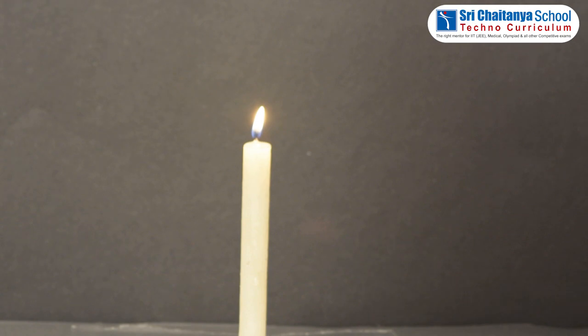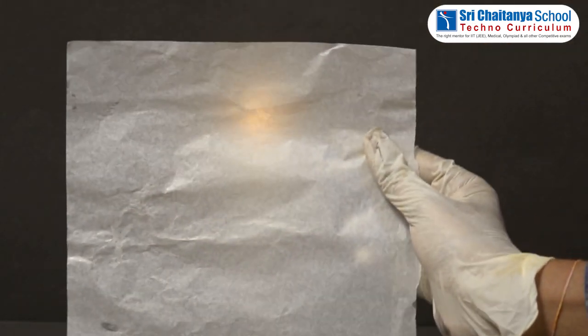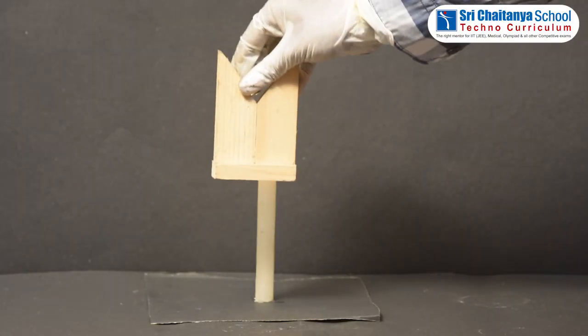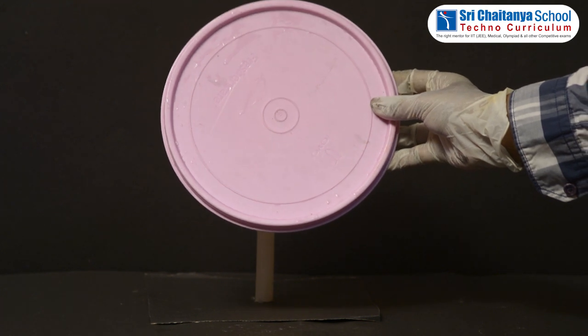Then, place a tracing paper opposite to the candle and observe. Then, repeat the same with a wooden sheet, a colored plastic sheet,